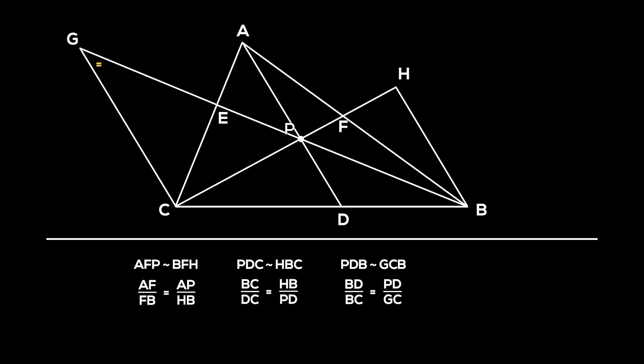Finally, angles CGE and EPA are equal, and angles GEC and PEA are equal. Thus, triangles GEC and PEA are similar, and CE over EA is equal to GC over AP.